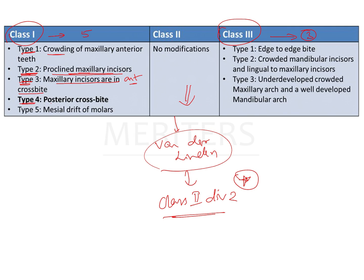Type 4 shows a posterior crossbite — so first comes anterior crossbite in type 3, then posterior crossbite in type 4. Type 5 is when there is mesial drifting of molars. This occurs in situations where there is early loss of deciduous teeth and the permanent molars drift mesially into the lost space when no space maintenance has been provided. So class 1 types include: crowding, proclination of incisors, anterior crossbite, posterior crossbite, and mesial drifting of molars.